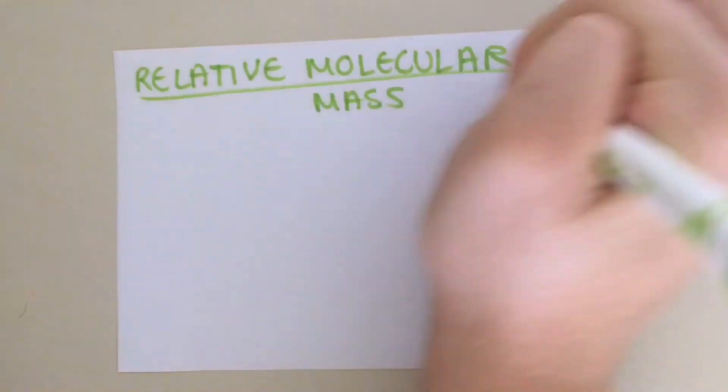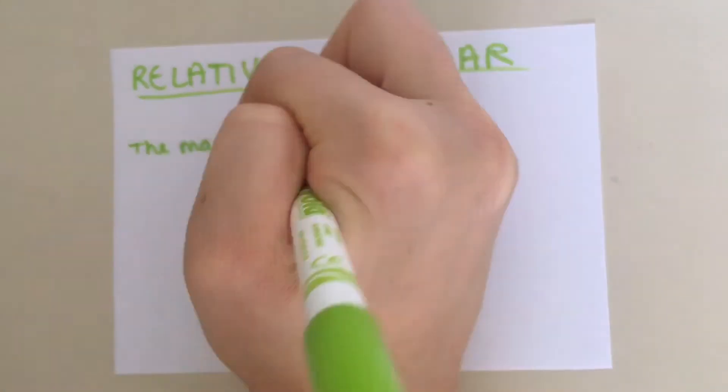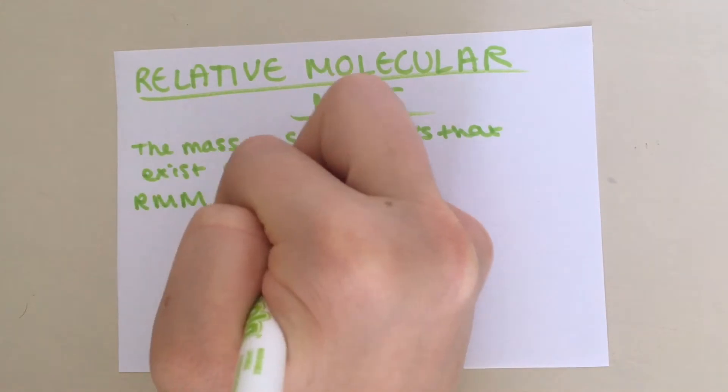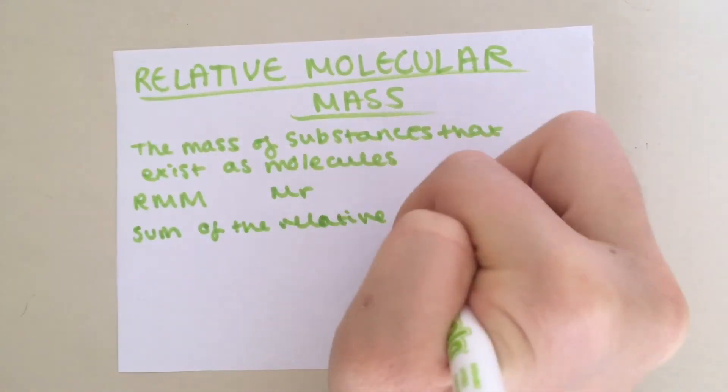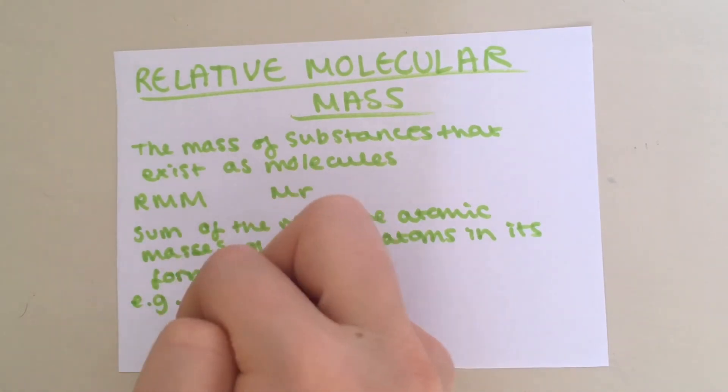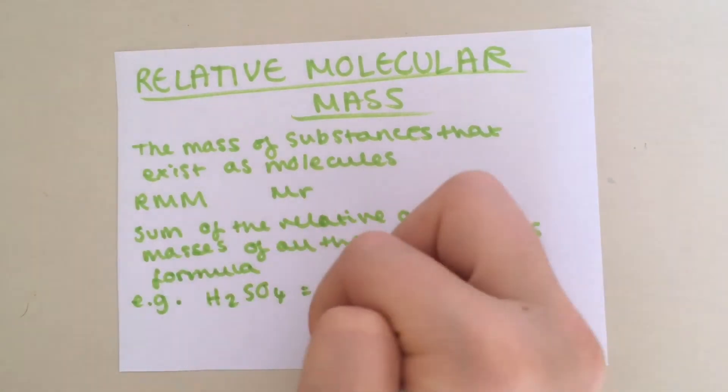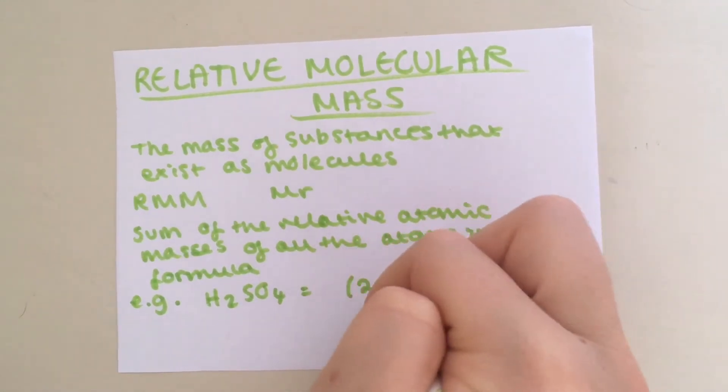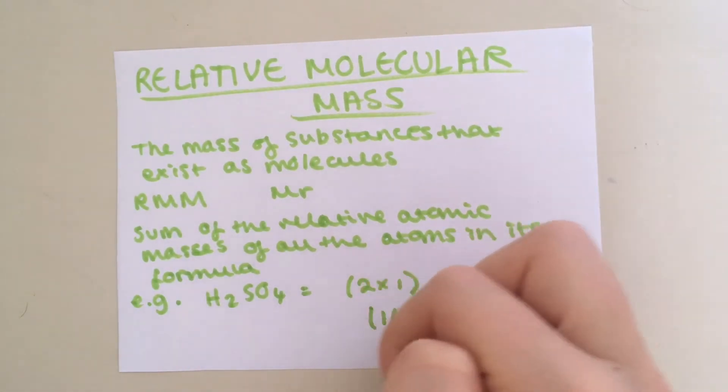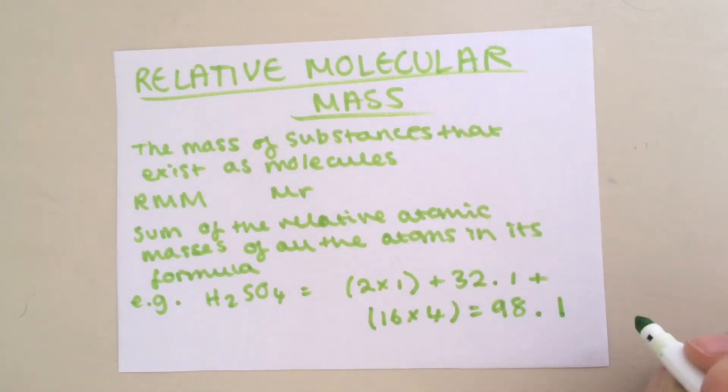Now let's take a look at relative molecular mass. It is the mass for substances that exist as molecules. You may see it written as RMM or MR. To calculate the RMM, you add up the relative atomic masses of all the atoms in its formula. For example, if you have H2SO4, sulfuric acid, you do 2 times 1 because you have two hydrogens with the relative atomic mass of 1 plus 32.1, the relative atomic mass of sulfur, plus 16 times 4 because you've got four oxygen atoms with a relative atomic mass of 16. This gives you 98.1, which is the relative molecular mass of sulfuric acid.